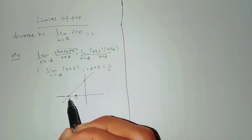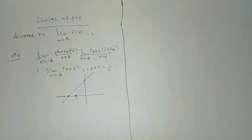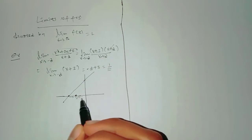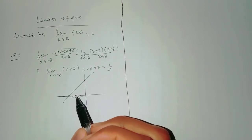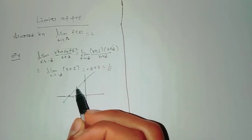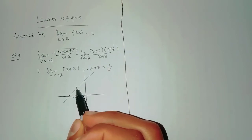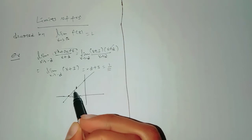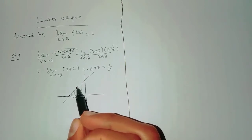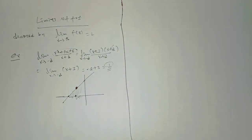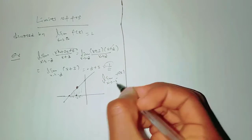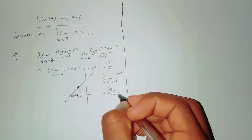Now looking at the graph, as x gets closer and closer to negative 2 from the left and from the right, f(x) approaches 1. The left-hand limit as x approaches negative 2 and the right-hand limit as x approaches negative 2 from the positive side both approach the same value.